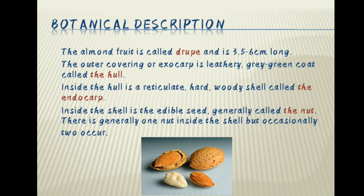Inside the hull is a reticulate, hard woody shell called the endocarp. Inside the shell is the edible seed, generally called the nut. There is generally one nut inside the shell but occasionally two occur.